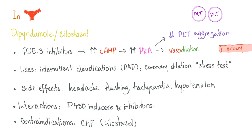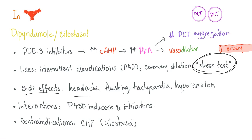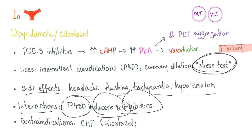Quick summary: dipyridamol and cilostazol are phosphodiesterase 3 inhibitors. Increased cyclic AMP → increased active protein kinase A → decreased platelet aggregation and vasodilation. Uses: intermittent claudication, peripheral arterial disease, coronary dilation for cardiac stress test when the ECG is non-diagnostic and the patient cannot exercise. Side effects: headache, flushing, tachycardia, hypotension. Drug interaction: CYP450 inhibitors including grapefruit juice. Contraindication: never give cilostazol to a patient with CHF — it decreases survival.